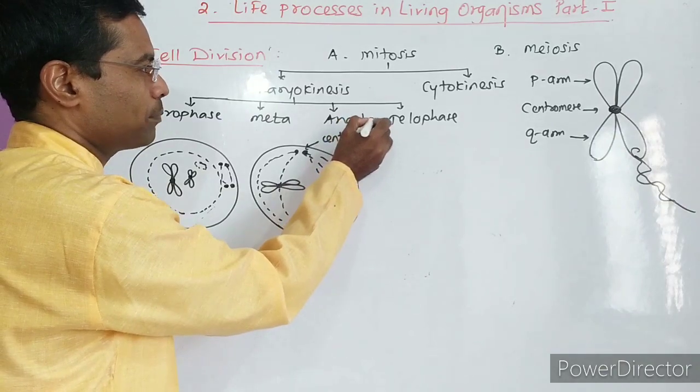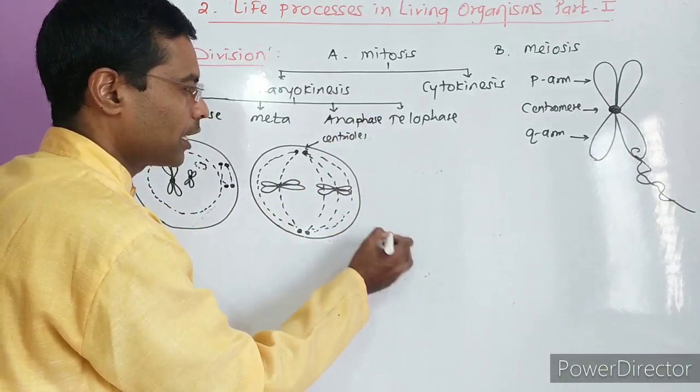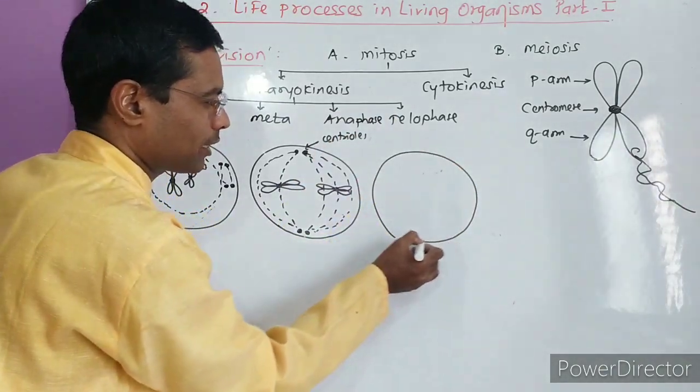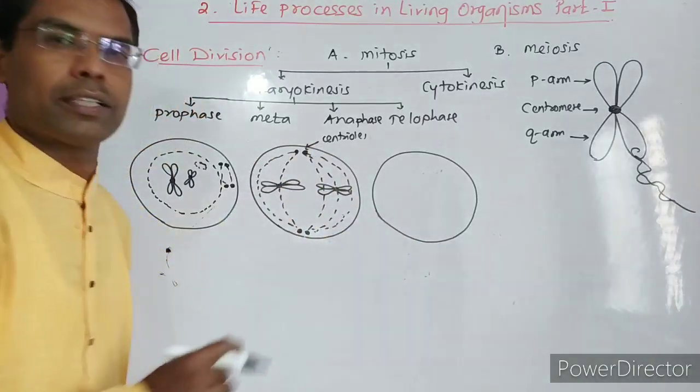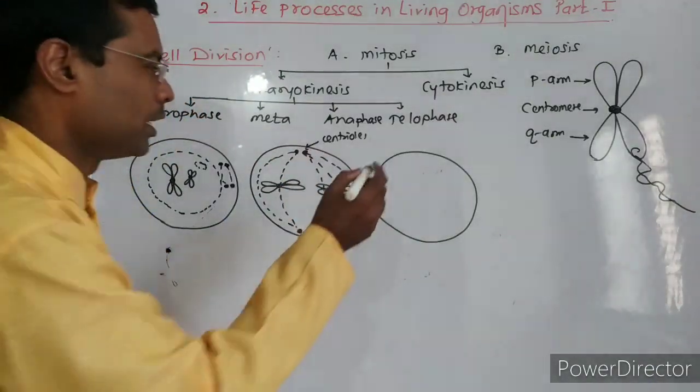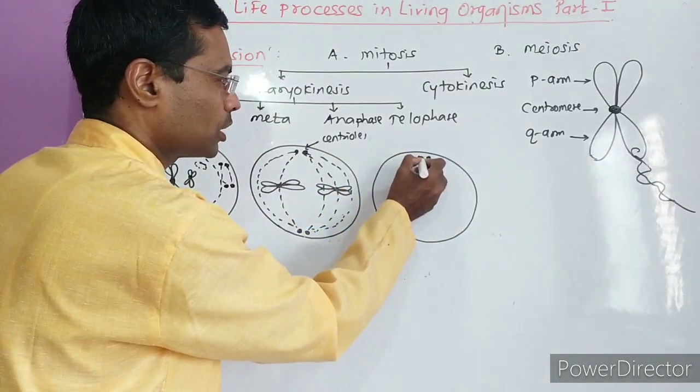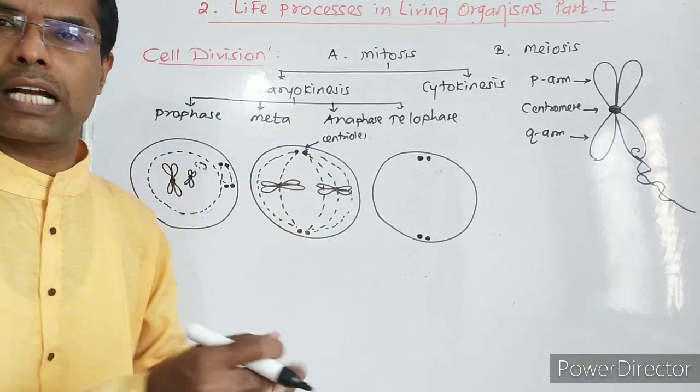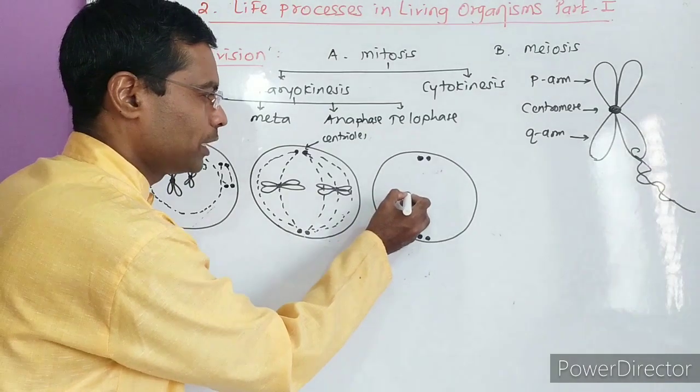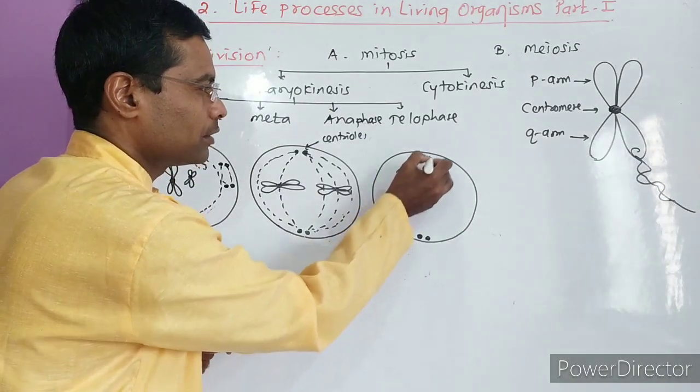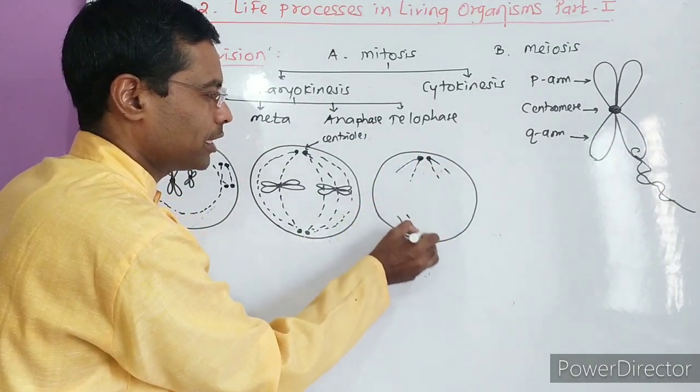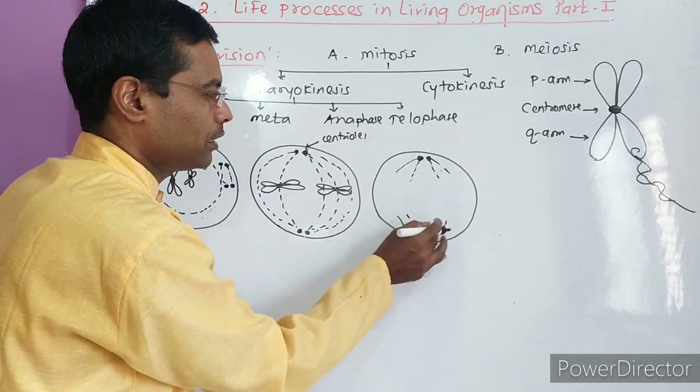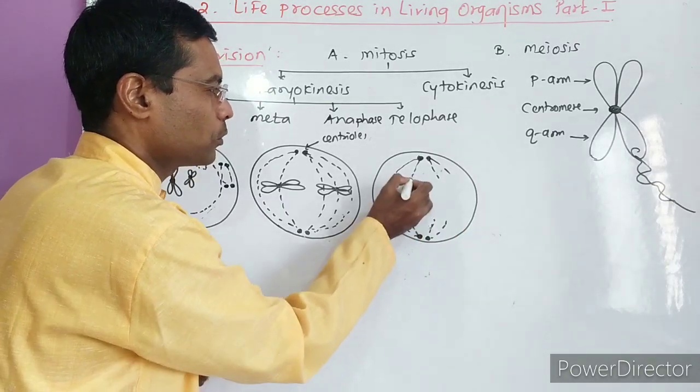The next is anaphase. What happens in anaphase? See now. In anaphase, these are the two centrioles. What happens with the chromosomes? The chromosomes split from the centromere. These are the spindle fibers.